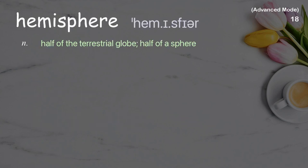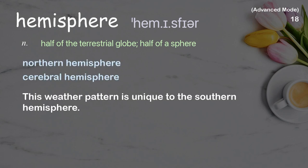Hemisphere: half of the terrestrial globe, or half of a sphere. Examples: northern hemisphere, cerebral hemisphere. This weather pattern is unique to the southern hemisphere.